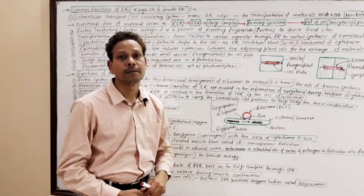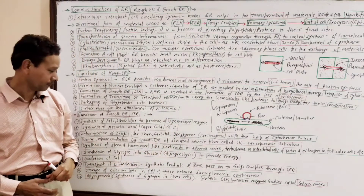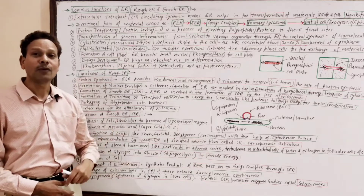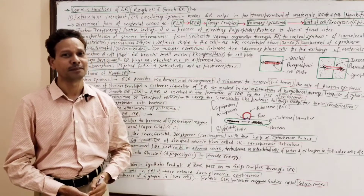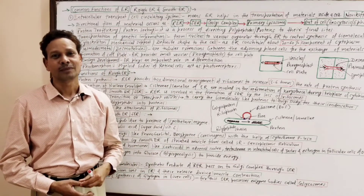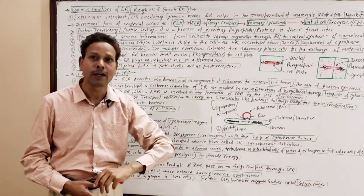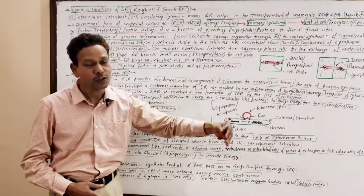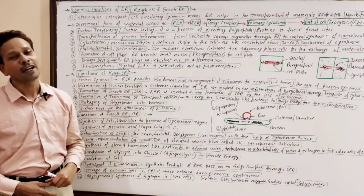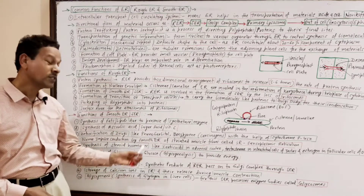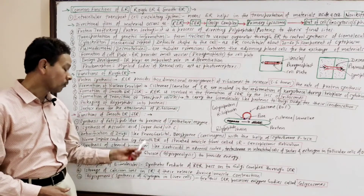Sarcoplasmic reticulum is synthesized by Smooth Endoplasmic Reticulum. In interstitial cells of testes and in ovaries, estrogen hormone is produced by follicular cells with the help of Smooth Endoplasmic Reticulum. Glycogenesis — synthesis of glycogen — as well as glycogenolysis — breakdown of glycogen — in liver cells are both carried out by Smooth Endoplasmic Reticulum. Initial oxidation of fat is also carried out by Smooth Endoplasmic Reticulum.